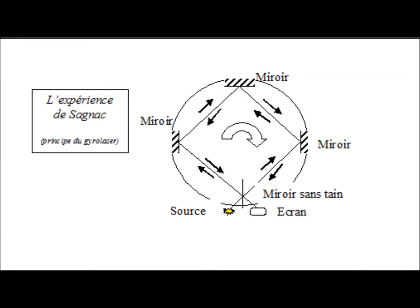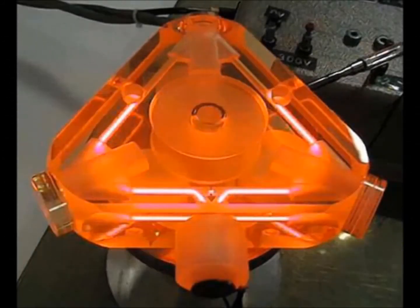No explanation of Sagnac's experiment by General Relativity has been found today. However, the Special Relativity theory is an approximation of General Relativity when fields are very low. Special Relativity should be able to explain the Sagnac experiment for very low speeds. Gyrolasers are able to detect rotation as weak as a hundredth of degree per hour.